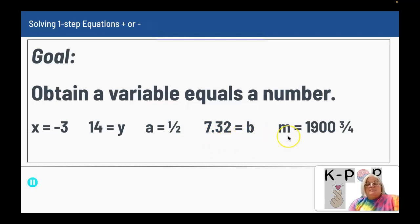You can have a mixed number - M equals 1900 3/4. So you want the variable equals a number. That's what you want to get to.